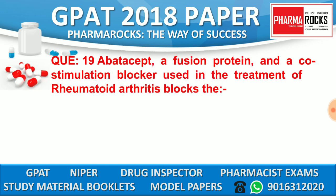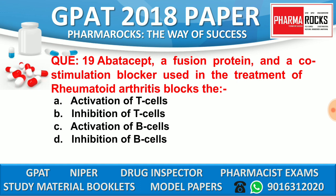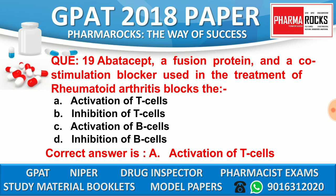Question number 19: Abatacept, a fusion protein and a co-stimulation blocker used in the treatment of rheumatoid arthritis, blocks. Option A: Activation of T-cell. Option B: Inhibition of T-cell. Option C: Activation of B-cell. Option D: Inhibition of B-cells. The correct answer is option A, activation of T-cells. Abatacept blocks the activation of T-cells.